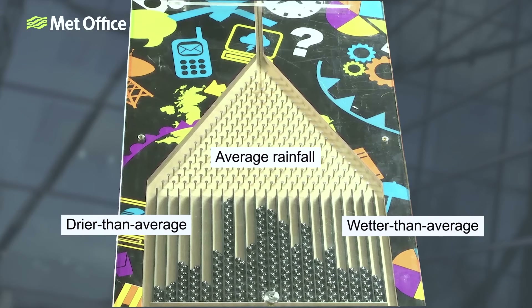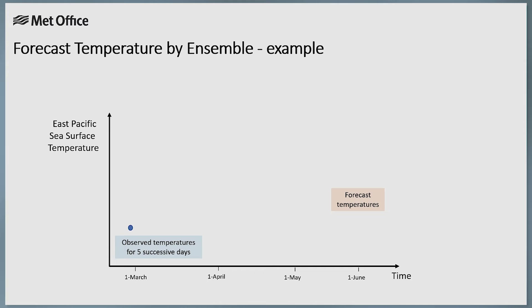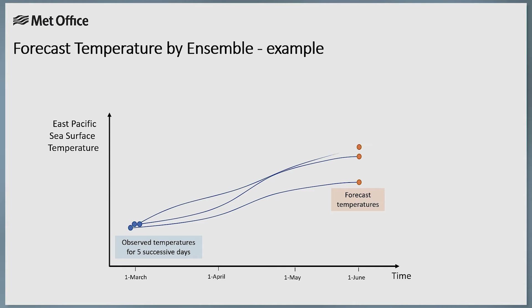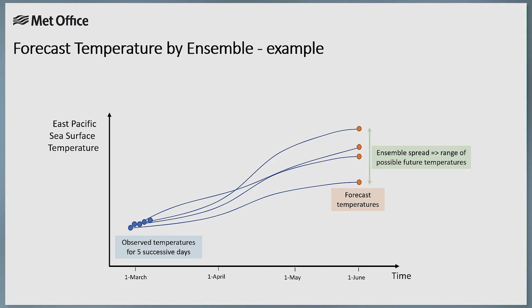Here's a temperature forecast for the East Pacific Ocean using an ensemble with five members. Each ensemble member has slightly different starting conditions, taken here as the conditions measured on five successive days. As the model simulation runs forward in time, the spread of the ensemble increases, providing a range of possible future temperatures for the forecast period.